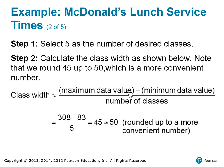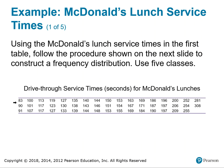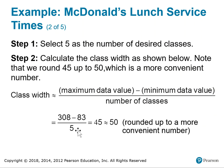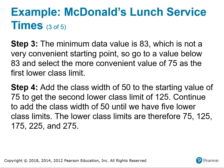We took the maximum data value in the table and the minimum data value and divided by five. Looking at this data set, it's in order from smallest to biggest. Data sets typically won't be in order when you collect the data, so you'll need to sort them. The quotient is 45, and we round up to 50 as our class width. The minimum data value is 83, which is not a convenient starting number.